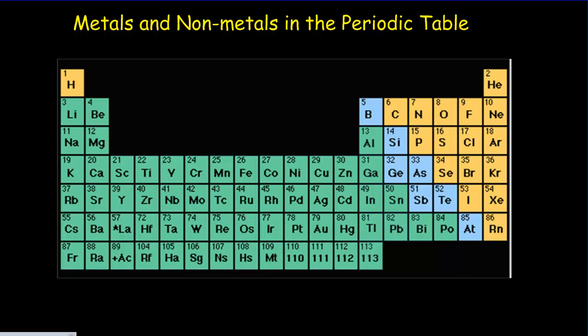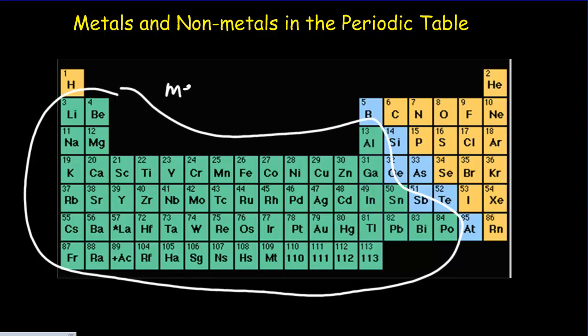And in fact, this idea is going to be responsible for how the periodic table looks. All of these green elements, they're metals, whereas these yellow ones, or orange ones here, they're all non-metals.